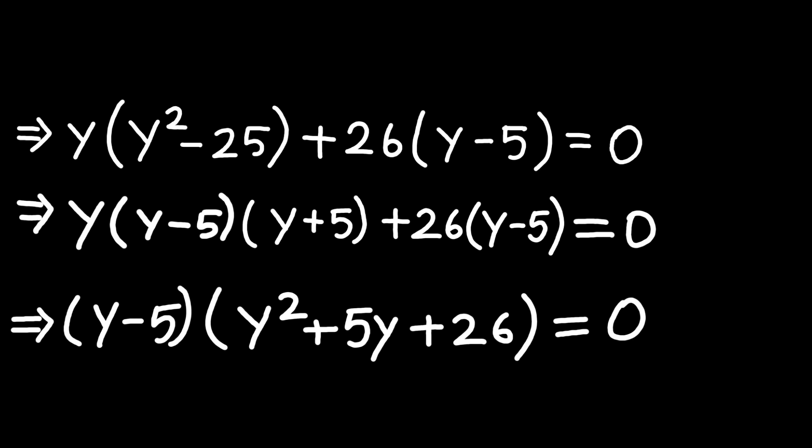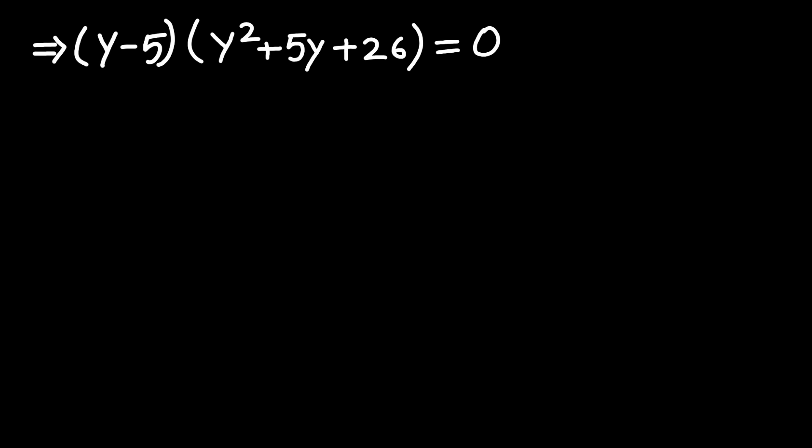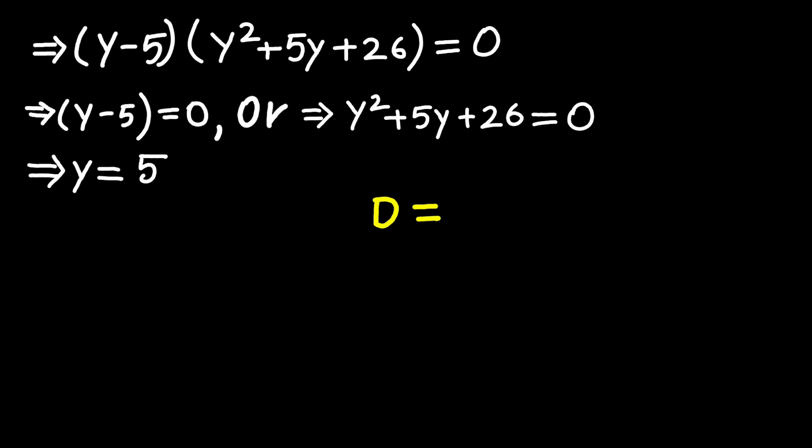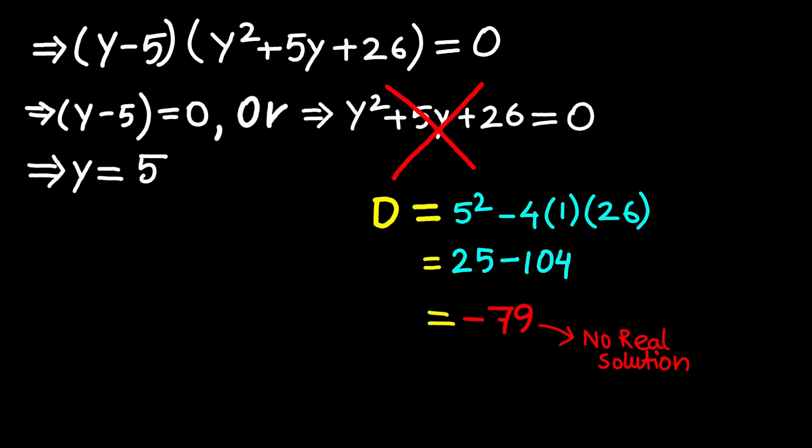Now moving on to solving for y, from y minus 5 equals 0, we directly get y equals 5. Nice and easy. But that other part, y squared plus 5y plus 26 equals 0, let's check the discriminant to see if we have real solutions. Discriminant equals 5 squared minus 4 times 1 times 26, which is 25 minus 104, giving negative 79. Negative means no real solutions there, so for real number work, we can ignore that part completely.